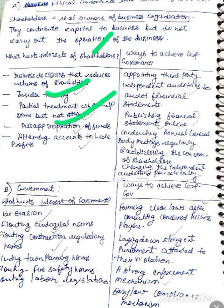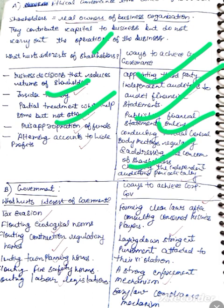To achieve corporate governance: a third-party independent auditor can be appointed. In addition to that, financial statements will be made available online. Then, annual general body meetings will be conducted regularly. Also, the independent auditor will be periodically changed — we need to change them regularly.